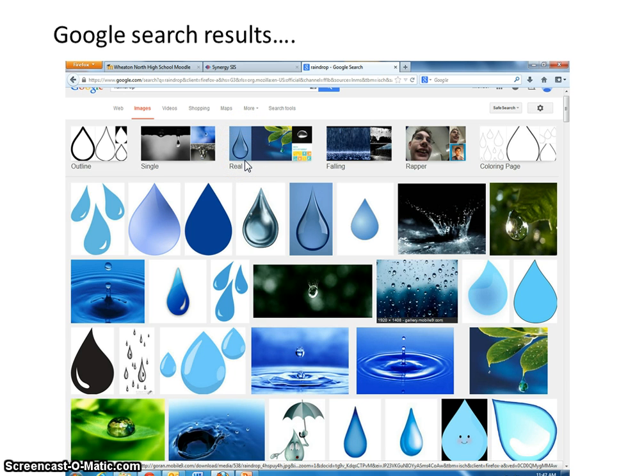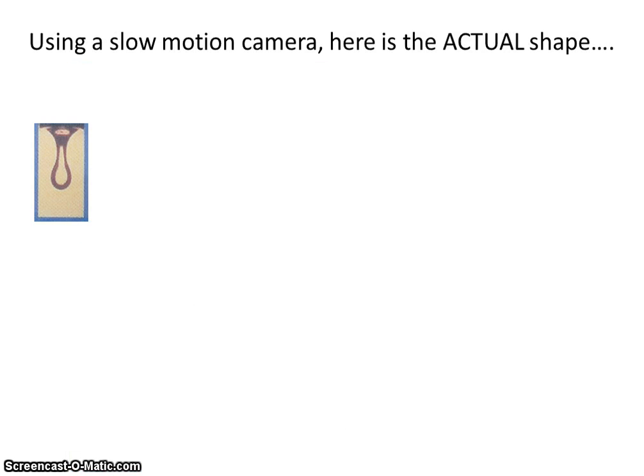It turns out that's not the case. A real raindrop looks something like this. Here's water clinging from a surface, and it's beginning to form a raindrop. So initially, you see it has a teardrop shape.